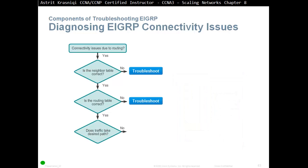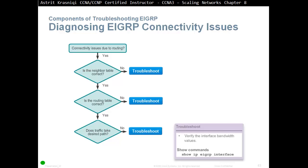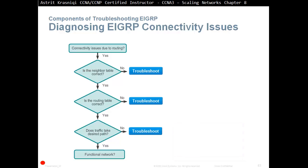If the routing table is correct but traffic is taking an undesired path, then we have to troubleshoot. One thing to verify is that the interface bandwidth has been correctly configured. The command we use for this is Show IP EIGRP Interfaces. If the path being taken is the one you want, then it's just a functional network.